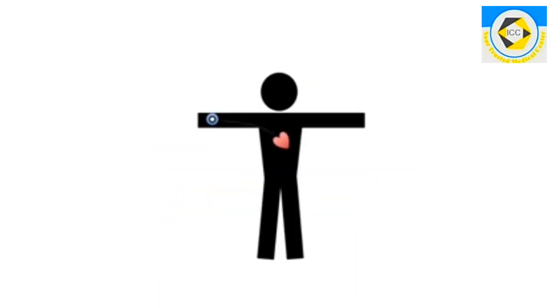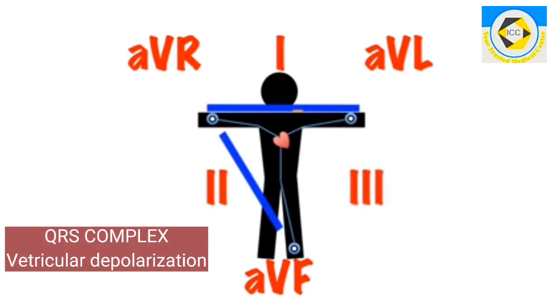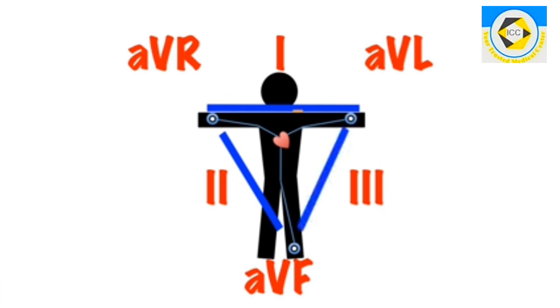Cardiac axis can be determined by examining the six limb leads which look at the heart from different angles in a vertical plane. QRS complex is most important and it represents the ventricular depolarization.